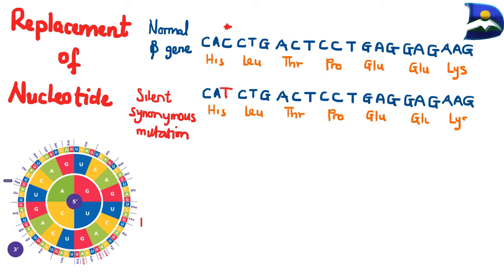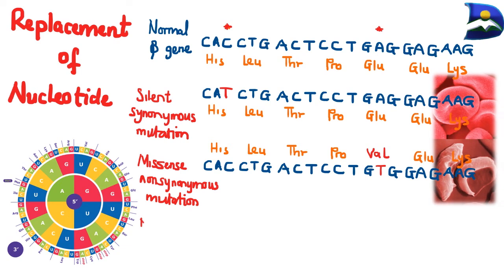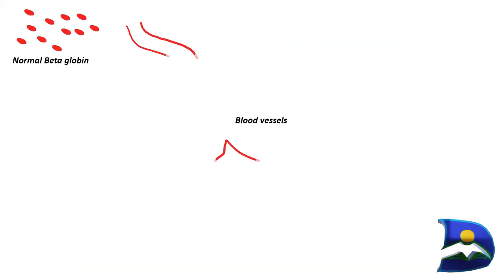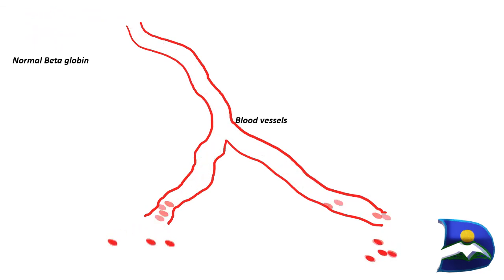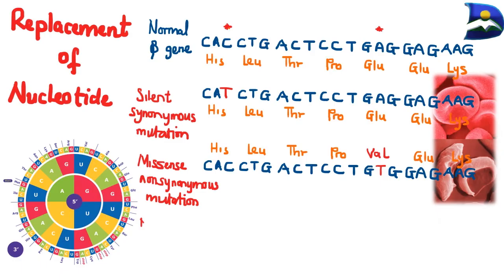Another type is called the missense or non-synonymous mutation. This changes an A to a T, and while we're reading the sequences we have the same amino acids for most codons; however, the third-to-last codon leads to a valine amino acid. This dramatically changes the structure and function of our protein, leading to negative effects — for example, our regular red blood cell versus sickle cell anemia, where the altered structure limits oxygen transport and can cause clogging of veins or arteries.